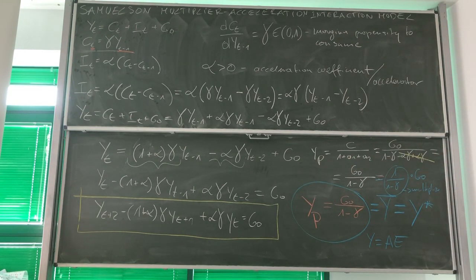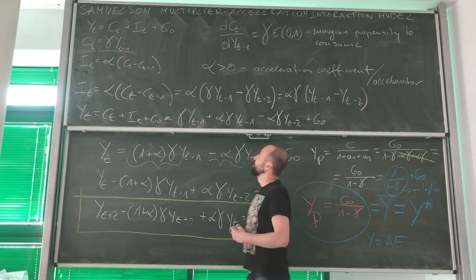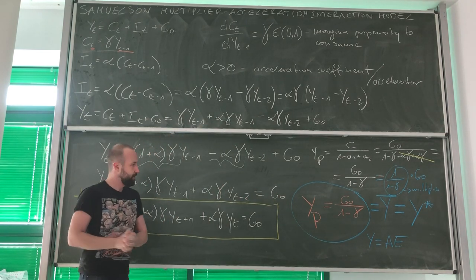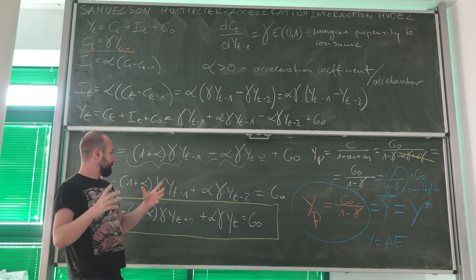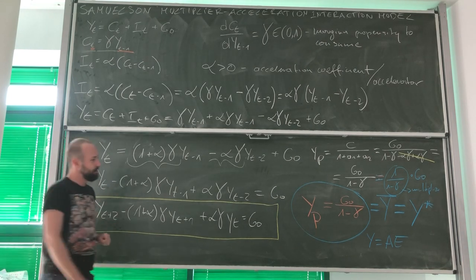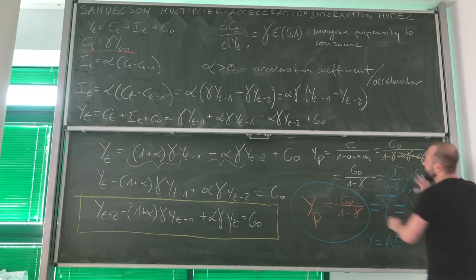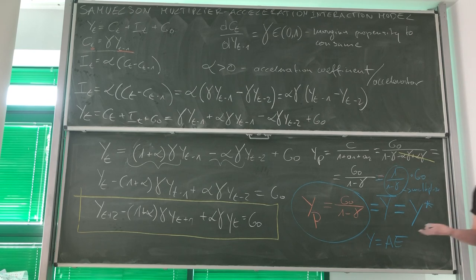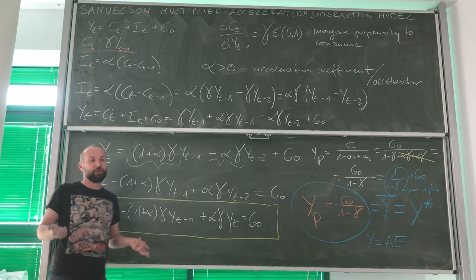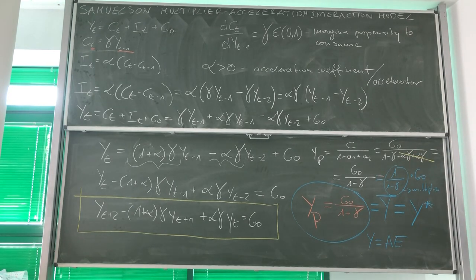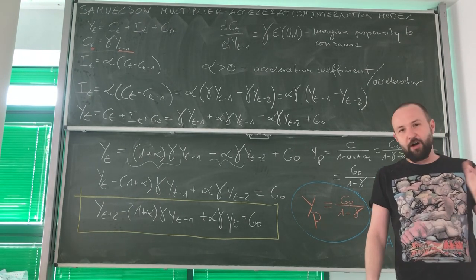I would say that this summarizes our introduction into Samuelson's multiplier-acceleration principle interaction model. At this moment, this is the equation we can work with, and we have a particular integral. Consequently, the only one last thing to do for us is to find a complementary function and assess the dynamic properties of equilibrium. And this is going to be the topic of our next video.